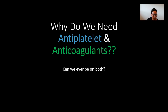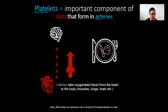Why do we need both anti-platelets and anticoagulants? Platelets are an important part of clots that form in the arteries. Arteries take oxygenated blood from the heart to the body — think of the 'A' in artery as an arrow pumping oxygenated blood away from the heart to the rest of the body, including the brain. So platelets are the important factor in arterial clots.